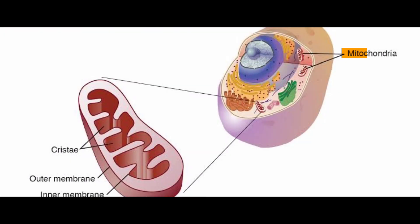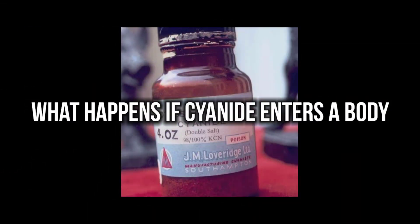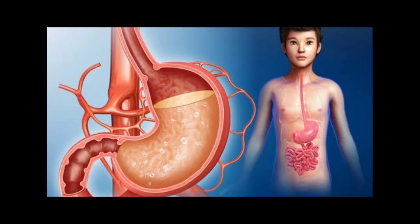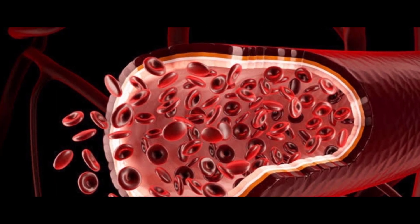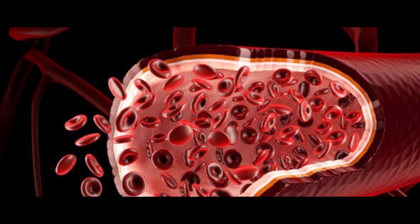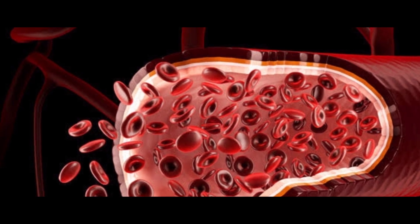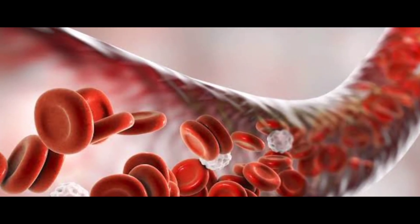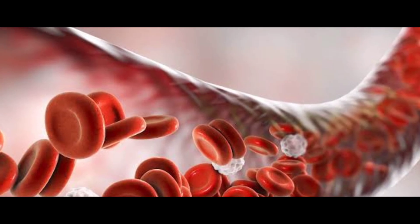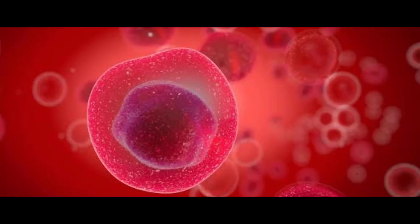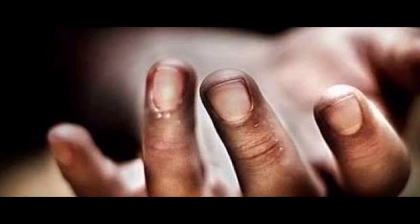Adenosine triphosphate — ATP — is released by the mitochondria and supplies energy to body cells. Cyanogen chloride and hydrogen cyanide interfere with this process: cyanide blocks oxygen utilization, preventing ATP release. Every organ is affected — ultimately the heart and the brain shut down.